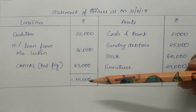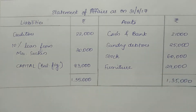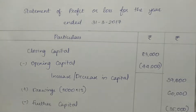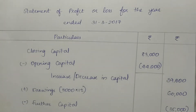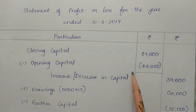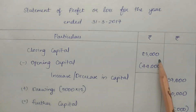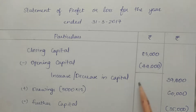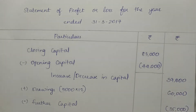Now we prepare the Statement of Profit and Loss. Closing capital is 83,000 and opening capital is 44,000. The increase in capital is 39,000. We then add drawings and account for additional capital introduced.